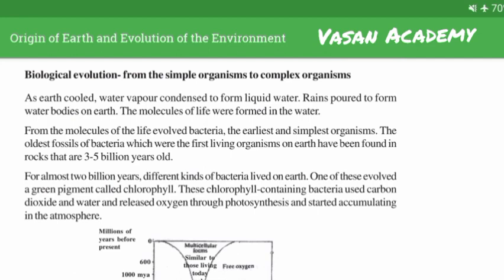For almost 2 billion years, different kinds of bacteria lived on earth. One of these evolved a green pigment called chlorophyll. These chlorophyll-containing bacteria used carbon dioxide and water and released oxygen through photosynthesis, which started accumulating in the atmosphere.